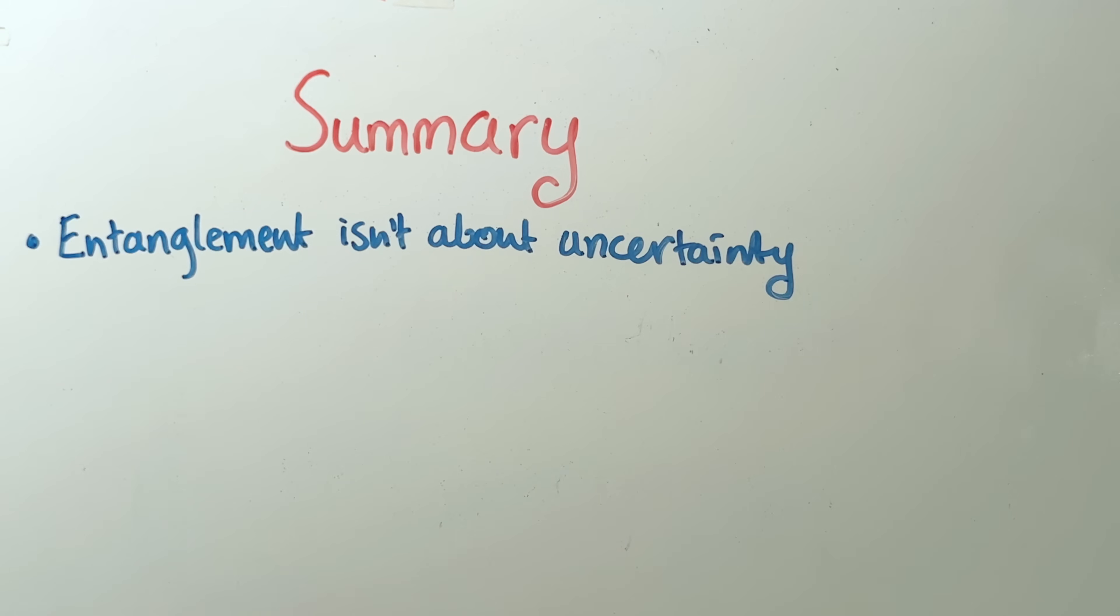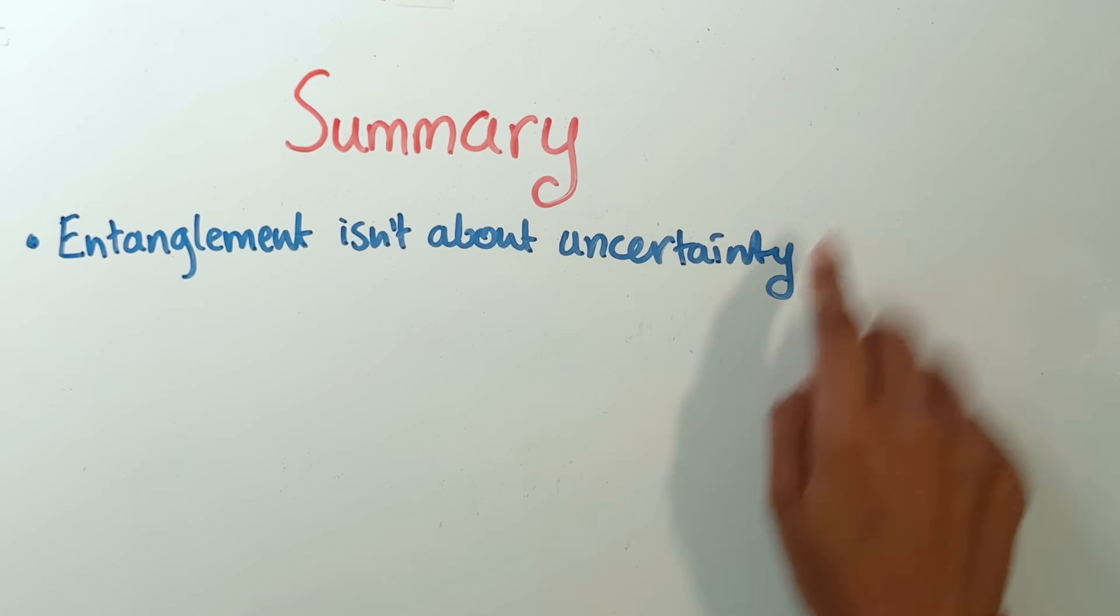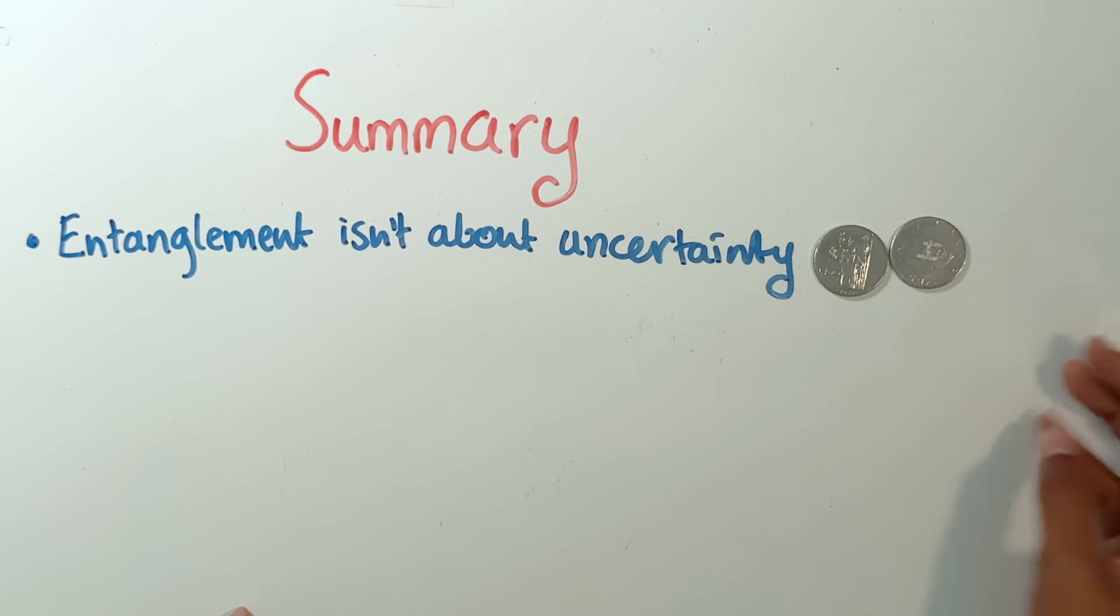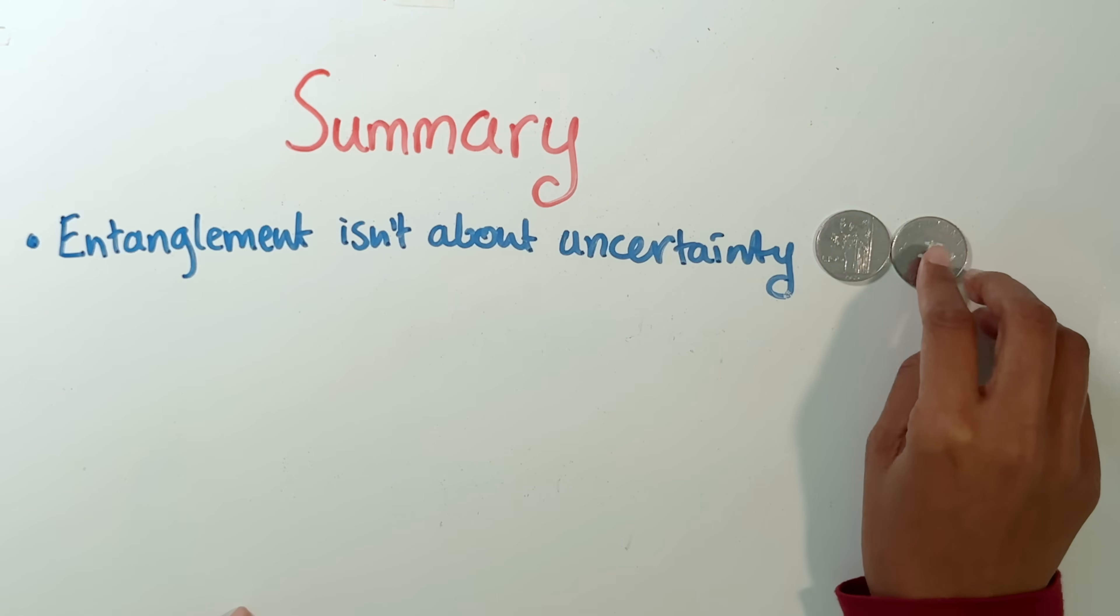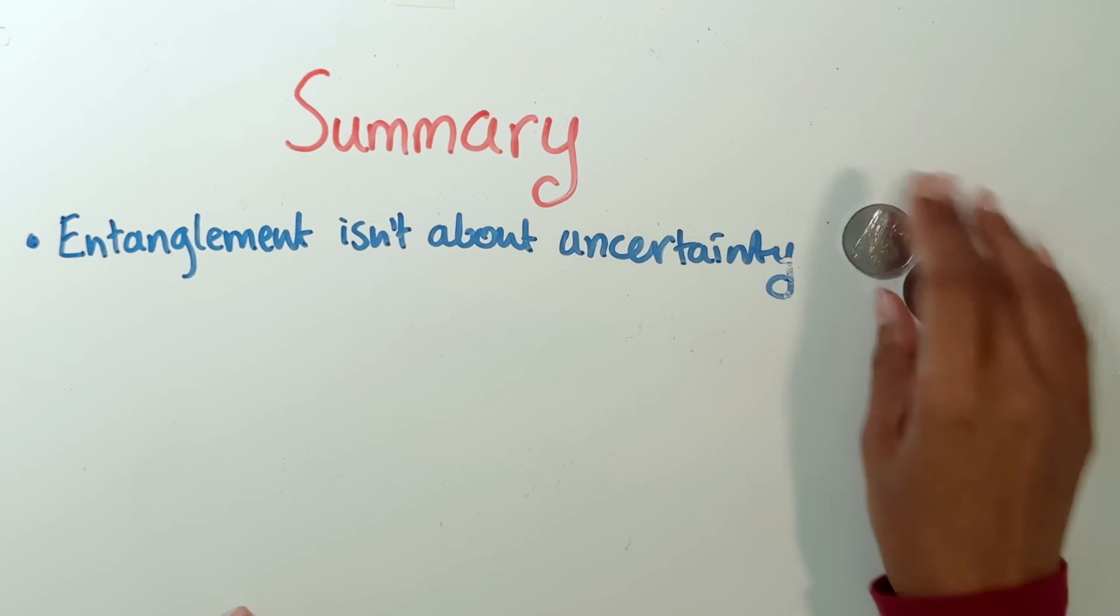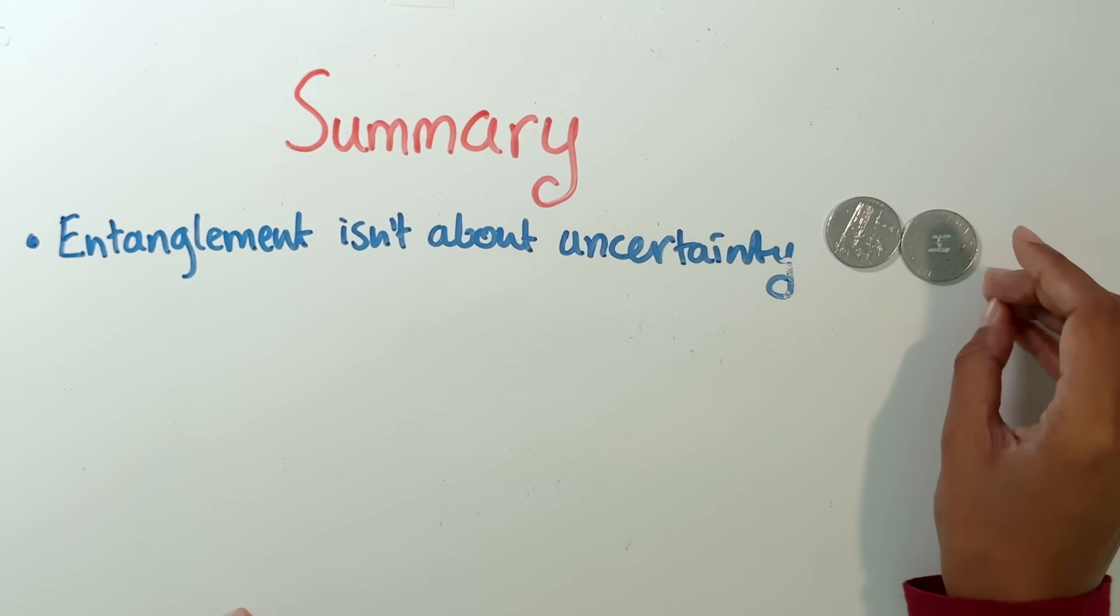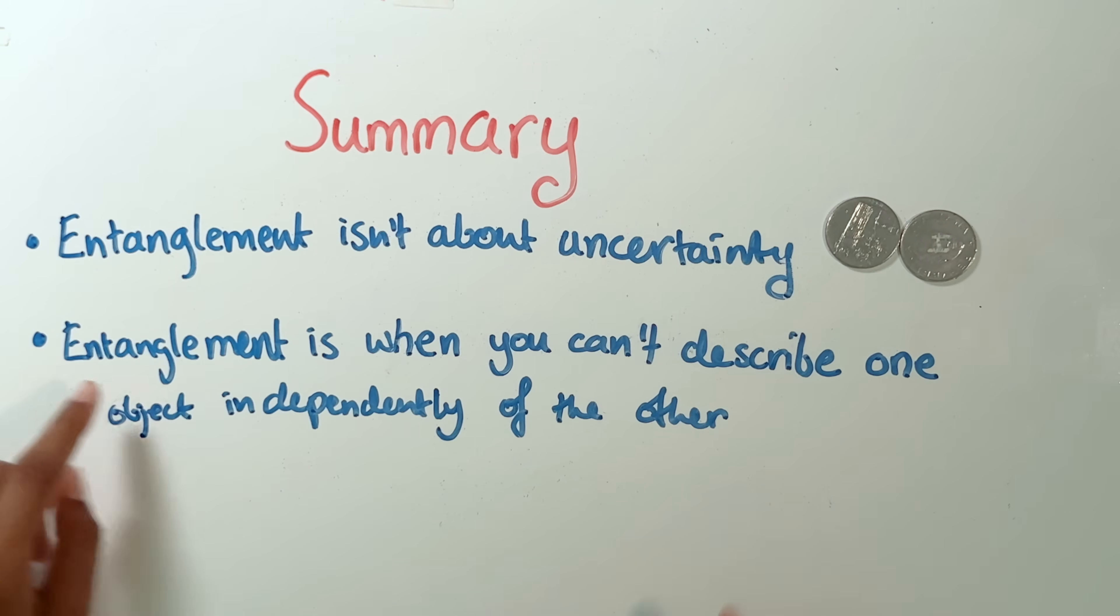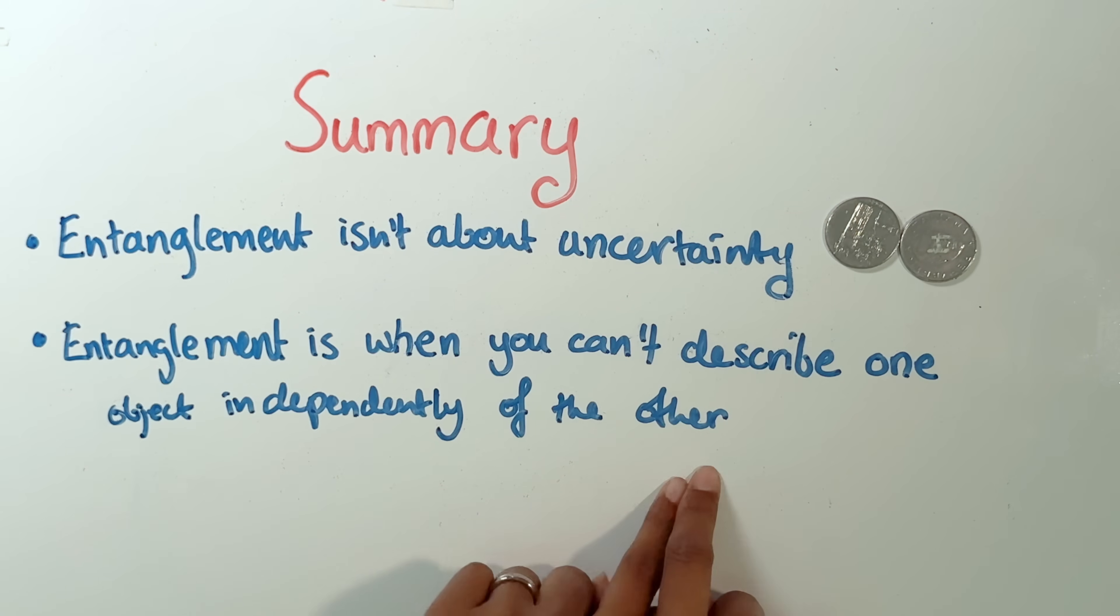But here is the summary of what we've covered. First, we saw that entanglement is nothing to do with uncertainty. So, as an example, if we had these two coins where they were always going to be opposite to each other, but we just didn't know which one was which, this is a state where we're uncertain about the state of each of these coins. But that is not an entangled state. Instead, for an entangled state, you have to have zero uncertainty about what the state is. But even so, you can't describe one of the objects independently of the other.